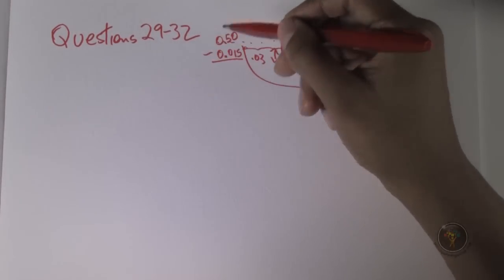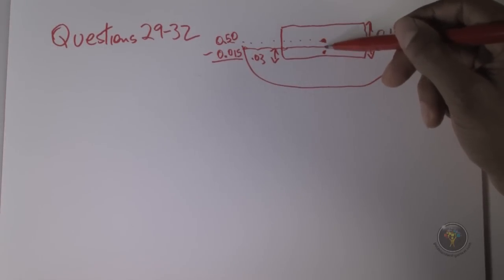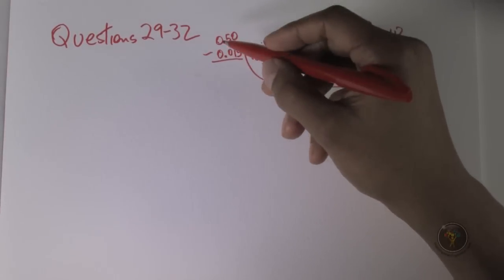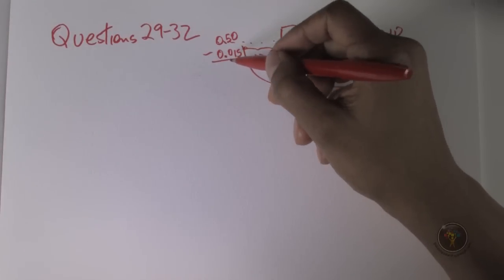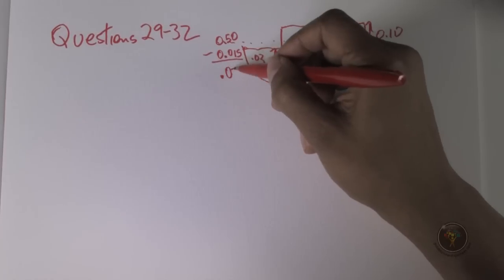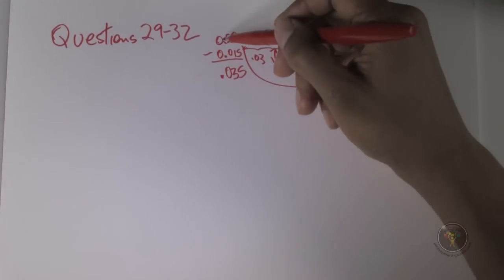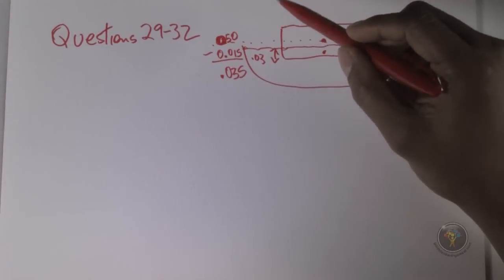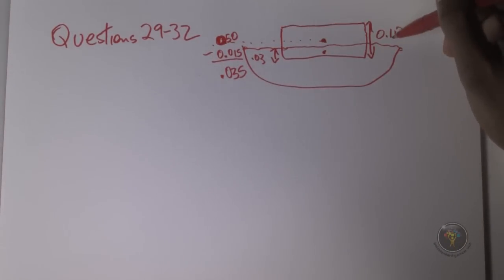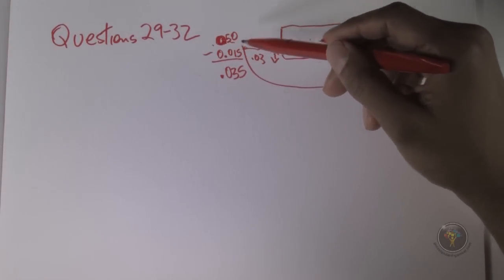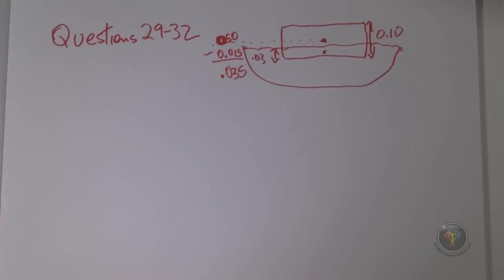So we have 0.05 minus 0.015, which gives us 0.035 meters — that's the vertical distance between the center of mass and the center of buoyancy. Just like 50 minus 15 is 35, so 0.5 minus 0.015 is 0.035. The answer is D — 0.035 meters. During the exam, always check units, making sure you're dealing in meters with no centimeters mixed in.